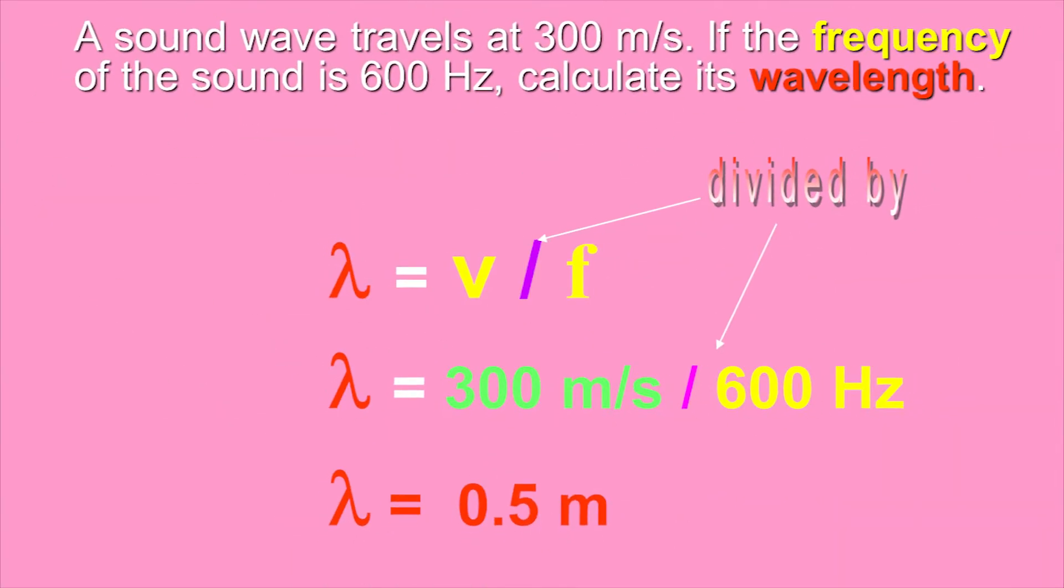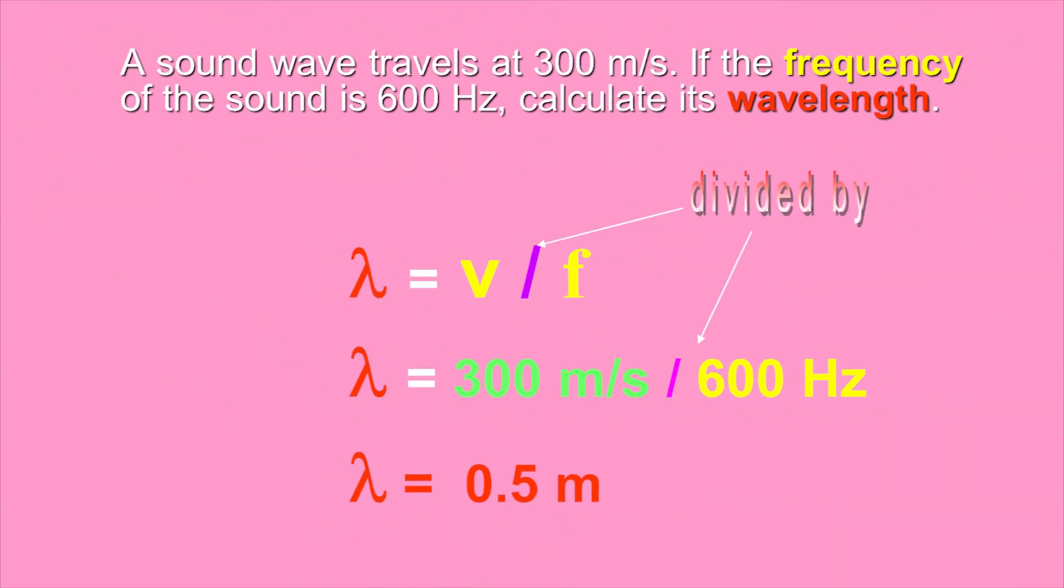In this question we wish to find out the wavelength. We use the magic triangle simply by covering up the thing we want to find out—in this case, lambda. It tells us what to do with the other two things. So it's simply wave velocity divided by frequency.